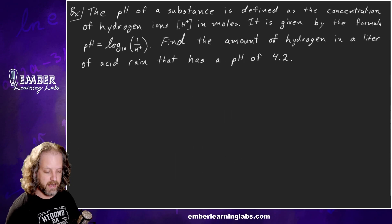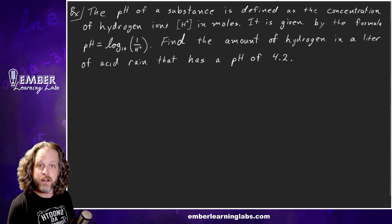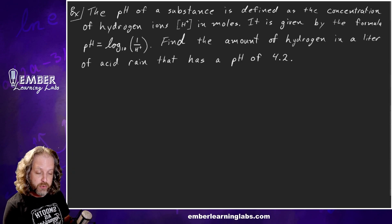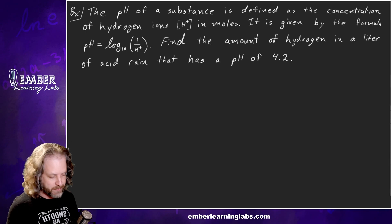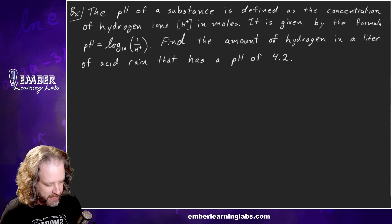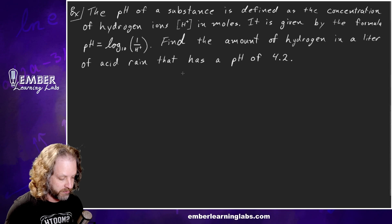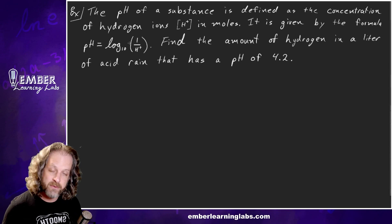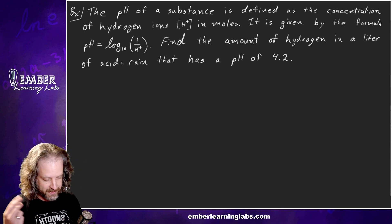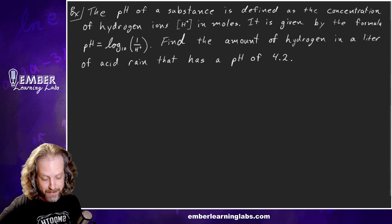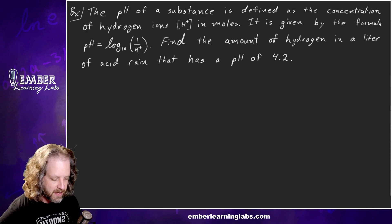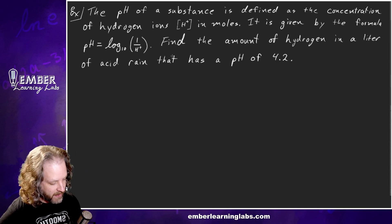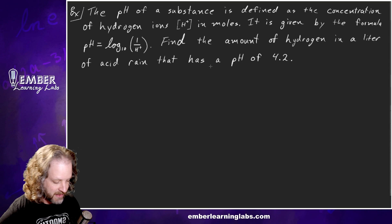Easy peasy. Next example — we've got a word problem. Don't get scared; just read the words and do the math. The pH of a substance is defined by the concentration of hydrogen ions H+ in moles, given by the formula pH equals log base 10 of one over H+. Find the amount of hydrogen in a liter of acid rain that has a pH of 4.2.